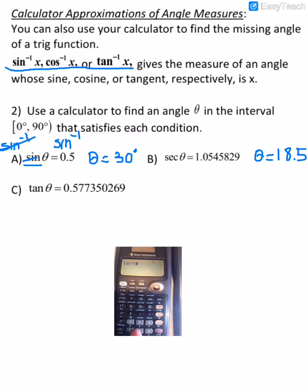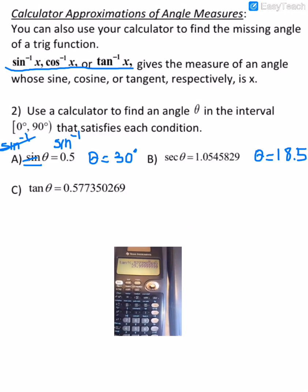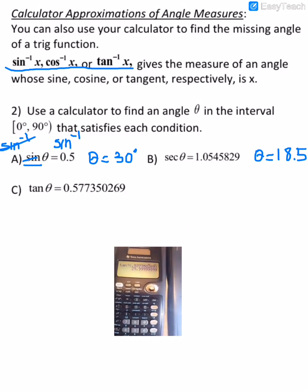And just put in what they've given us, 0.577350269. And we get 29.999 repeating, so that would just round up to 30 degrees.